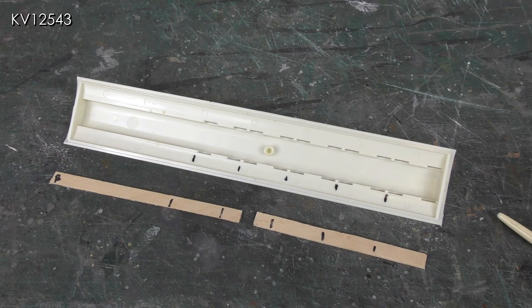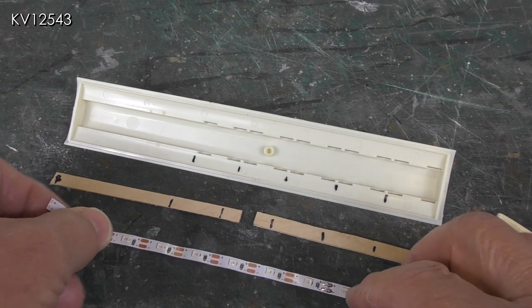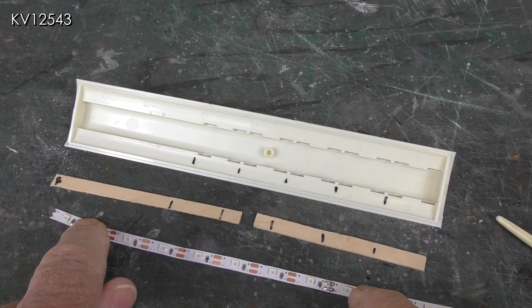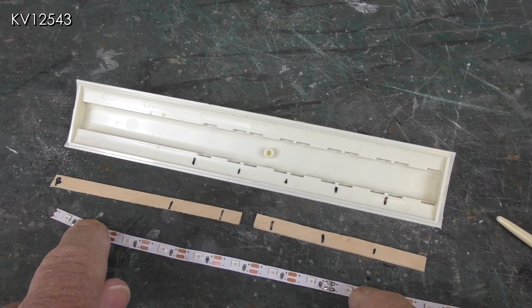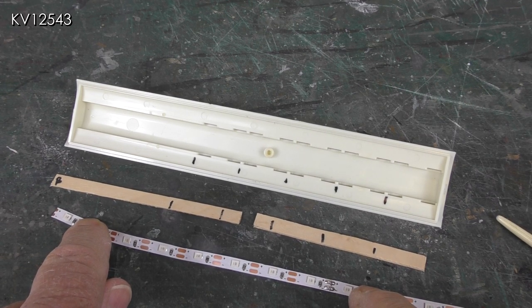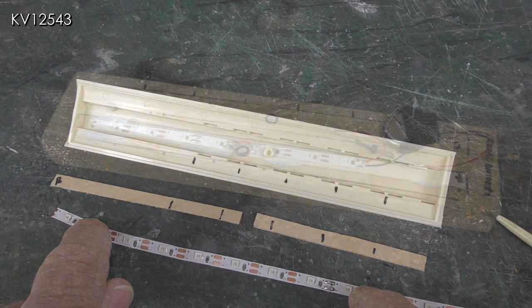Unfortunately, the spacing of the LEDs on the strips as supplied does not align sufficiently for these particular coaches. So it will be necessary to cut the strip and then rejoin each section with small lengths of wire.